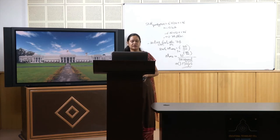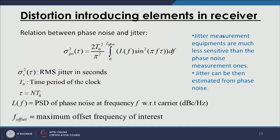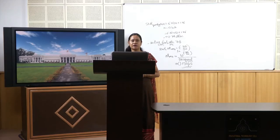The RMS jitter depends on the time period of the clock, proportional to the square of the time period. The variable τ is measured after N time intervals — it is the time elapsed during N time intervals — and the RMS jitter is a function of τ. In this function, we integrate the product of L(f) with sin²(πfτ), where f is the frequency over which we integrate and the upper integration limit is f_offset, the maximum offset frequency of interest for the jitter effect.